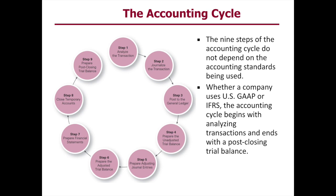So let's look at the nine steps. Step one, we're actually going to confirm that a transaction has actually happened, and then we'll take that transaction, analyze it — find out if there's an asset affected or a liability affected — and then we'll journalize the transaction.